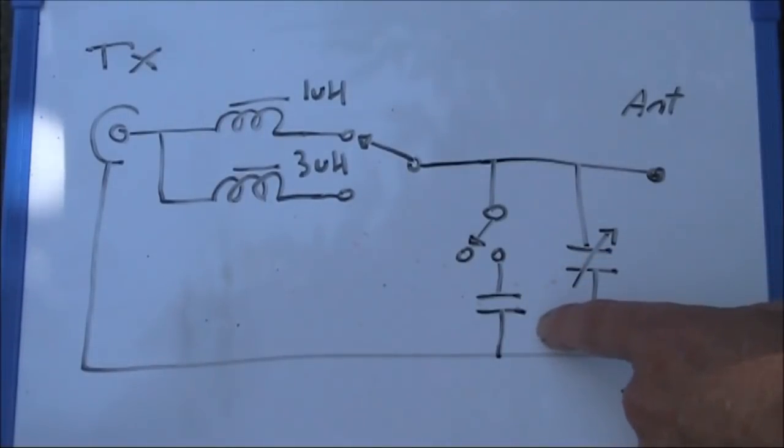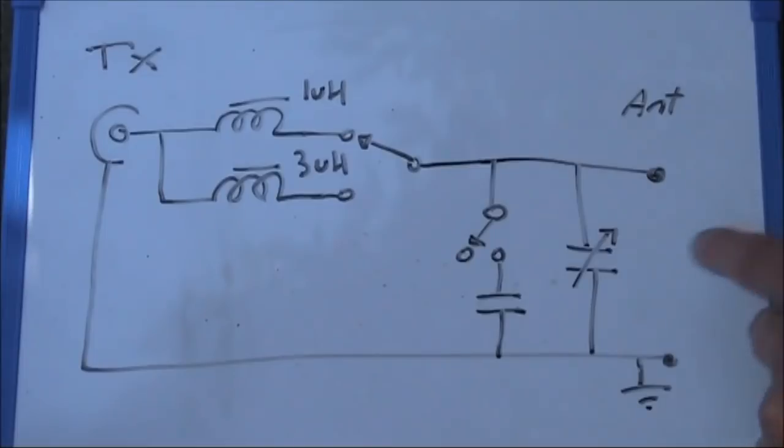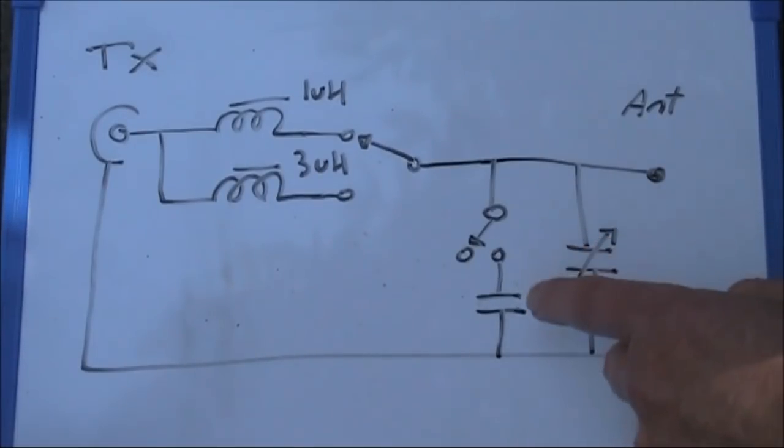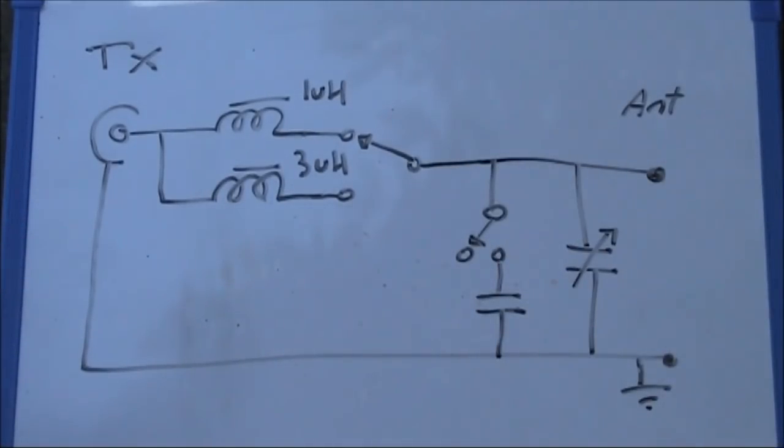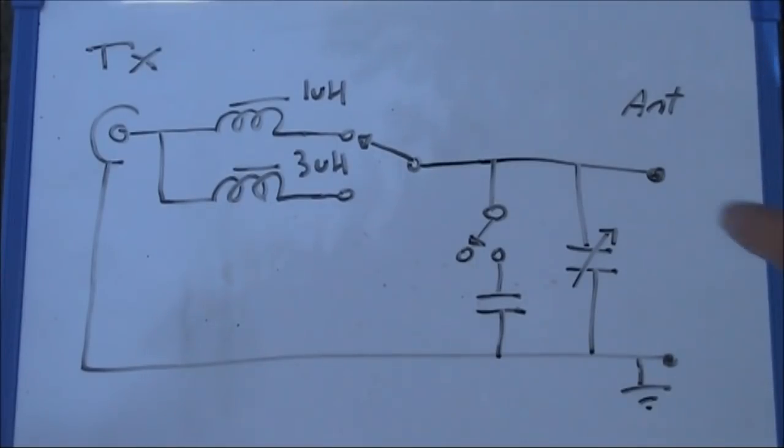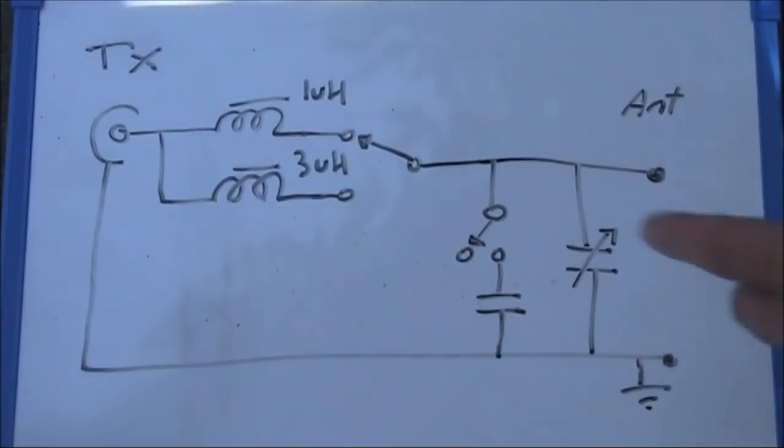A problem with that is you won't get as wide a range of impedances that you can match. There may be some cases where you need the switches to be out of kilter. But if you experiment, and particularly if you're not using it on bands like 5 and 10 megahertz, then you should be able to select capacitor and inductance values so that that doesn't end up being a problem in practice.